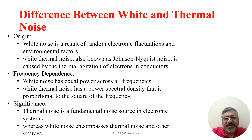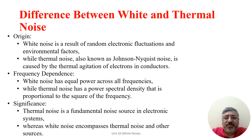Comparing white noise with thermal noise: white noise arises from unpredictable electronic fluctuations and environmental influences, whereas thermal noise — also referred to as Johnson-Nyquist noise — arises as a consequence of the thermal motion of charge carriers in a conductor. White noise exhibits uniform power distribution across all frequencies, whereas thermal noise has a power spectral density that is directly proportional to temperature. Thermal noise is a fundamental source of noise in electronic systems, while white noise also encompasses thermal noise as well as many other noise sources available in wireless communication systems.